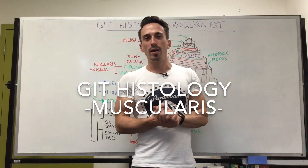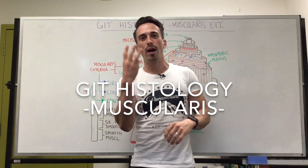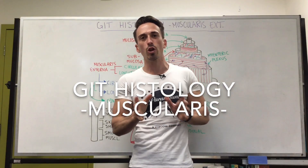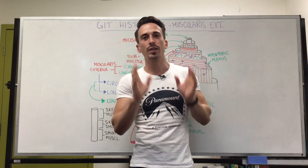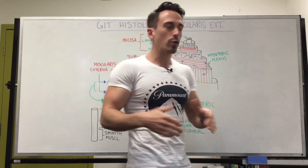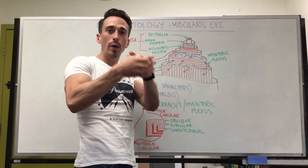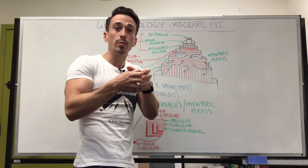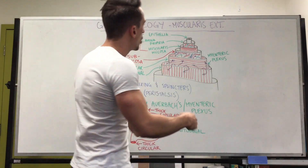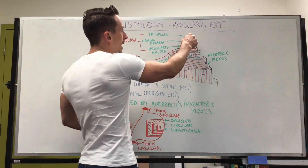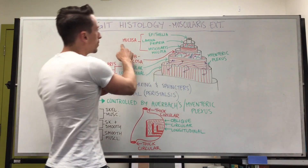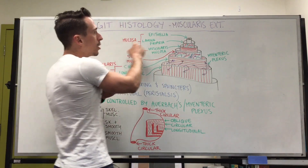Hi everybody, Dr. Mike here. We're now on to our third layer looking at the histology of the gastrointestinal tract. What we've spoken about so far is: if we look at the hollow inside of the tube that extends from our mouth to our anus, we've got the first layer which is actually made up of three individual layers called the mucosal layer.